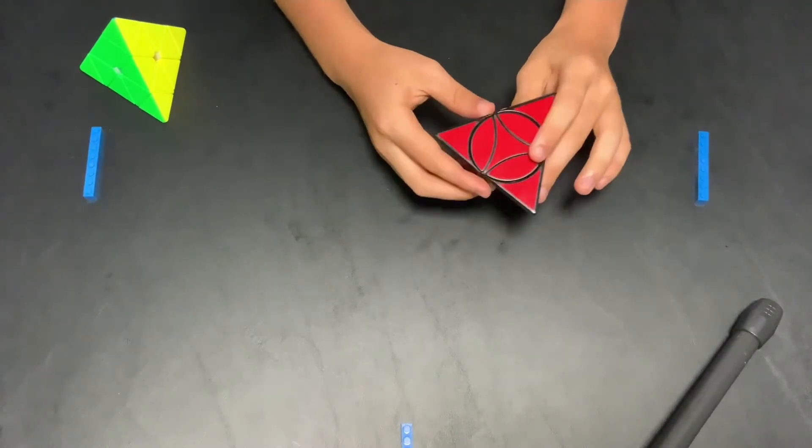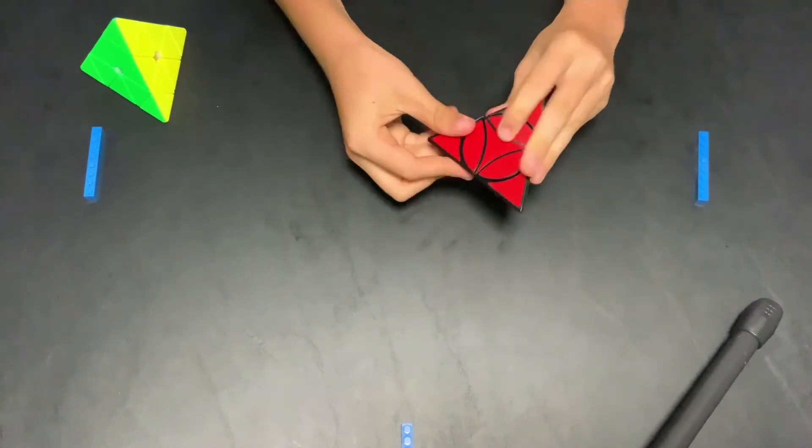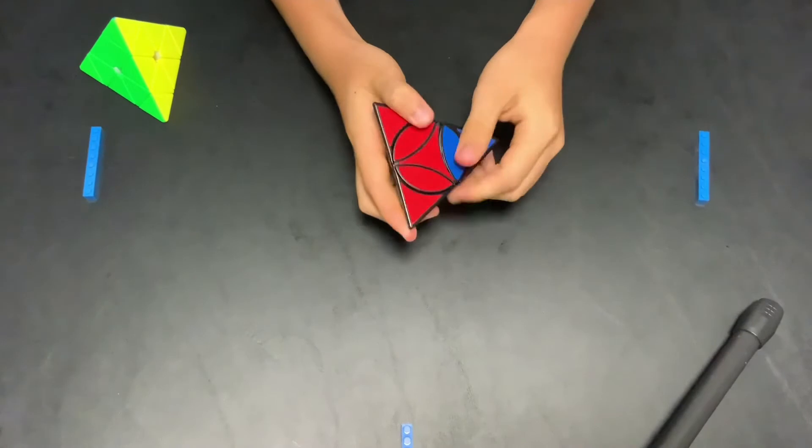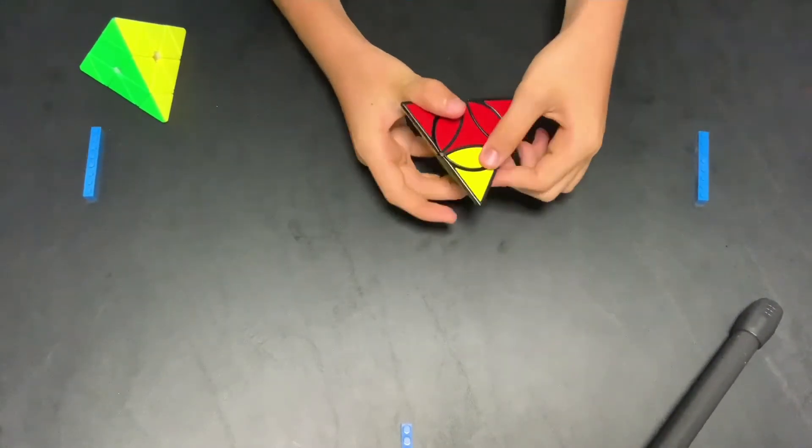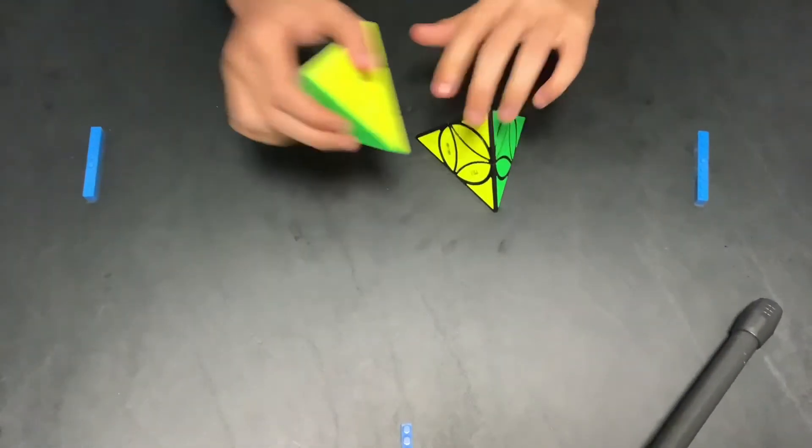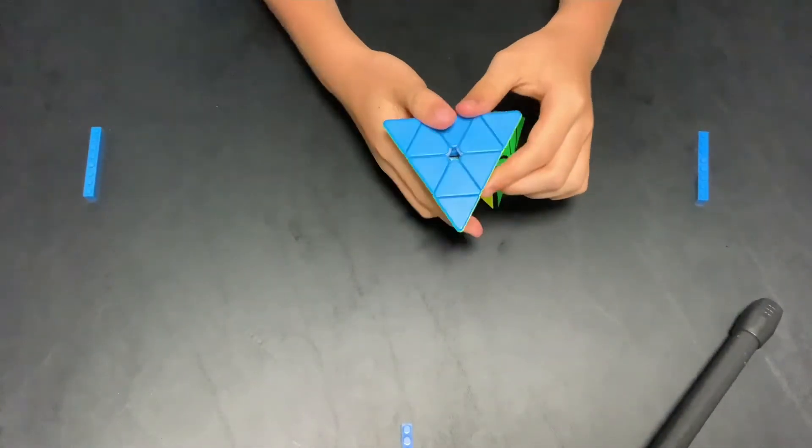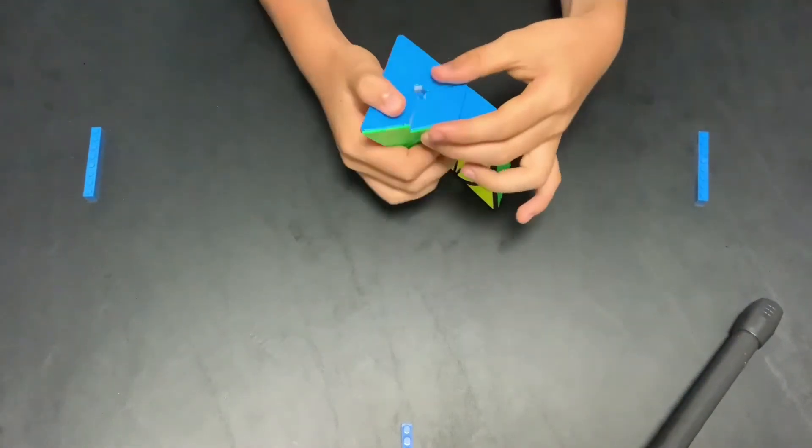And the corner and edge pieces turn together. Like so. And they can turn firmly together like that. Similar to a pyraminx, how it can turn with the second layer and the corner tip. Like that.